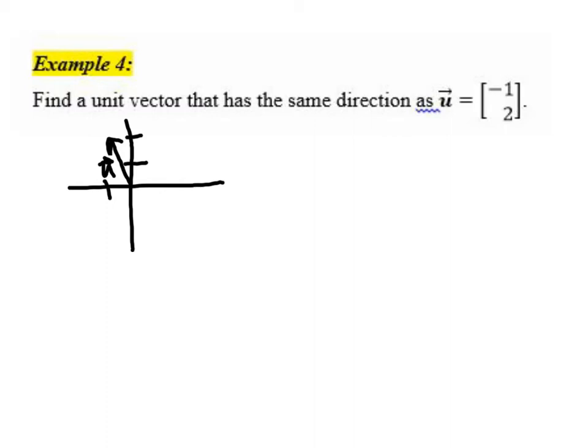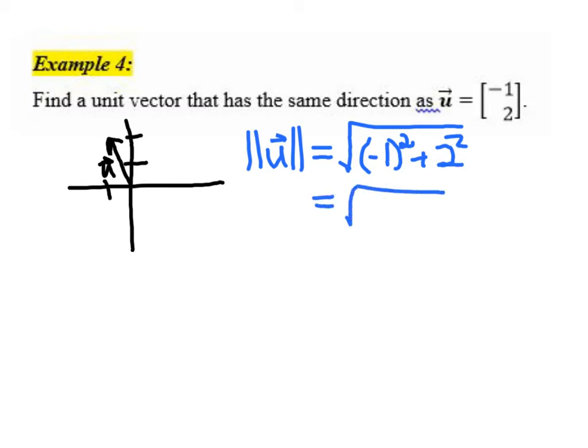So we want a vector that has that same direction, but has length exactly 1. It might help to note what the length of u is. So remember, the length of the vector u is equal to the square root of u dot u, so it's just the sum of each component squared. So negative 1 squared plus 2 squared. So in this case, that's the square root of 1 plus 4, so square root of 5, which is not 1. So the vector right now has length greater than 1. And so we're looking for just a vector kind of like this that has length exactly 1.